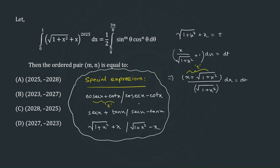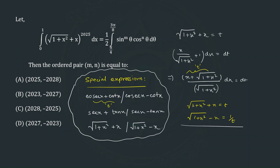Applying this to our problem: since √(1+x²) + x = t, it follows that √(1+x²) − x = 1/t. Adding both equations gives 2√(1+x²) = t + 1/t, so √(1+x²) = (1/2)(t + 1/t). We can now substitute this value of √(1+x²) into our expression.